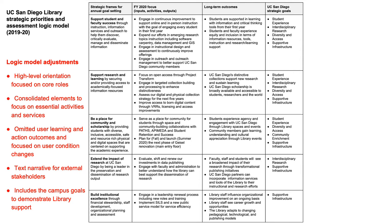In another simplification tactic, we omitted user learning and action outcomes from the table and presented user condition changes instead. To help us communicate to a broad range of stakeholders, including staff, users, and campus administrators, our logic model relies on text narrative for straightforward explanation and includes UC San Diego goals to demonstrate the library's support of campus priorities.